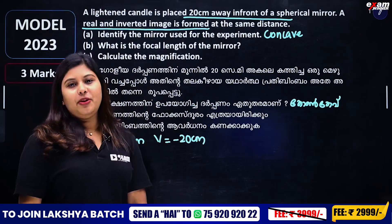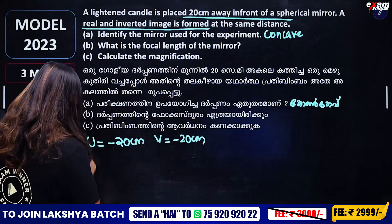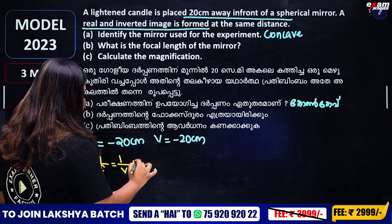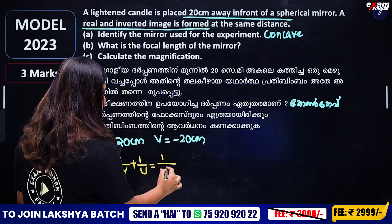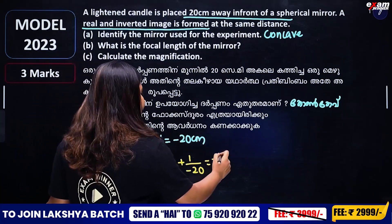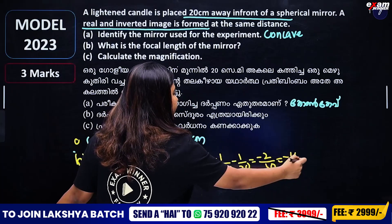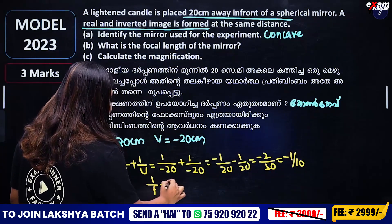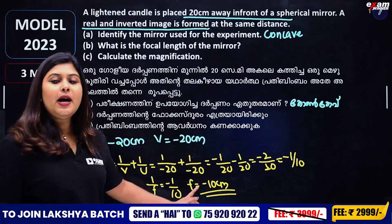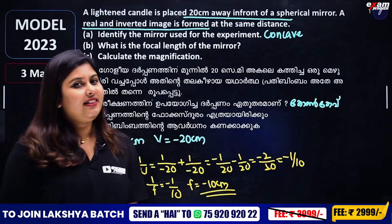What is the focal length of the mirror? We use the formula: 1 by f equals 1 by v plus 1 by u. That means 1 by minus 20 plus 1 by minus 20, so minus 1 by 20 minus 1 by 20 is minus 2 by 20, that is minus 1 by 10. So f is equal to minus 10 centimeter.